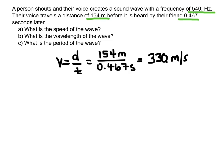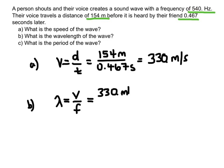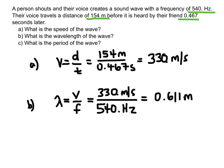Now I can move on to the wavelength, and I can use the wave equation for this. Now that I know the speed of this wave — I solved for that and found it was 330 meters per second — I can just divide that by the frequency, which was given in the problem: 540 hertz. And I'll find a wavelength of 0.611 meters. Wavelength is a length, so we use the SI unit of meters.